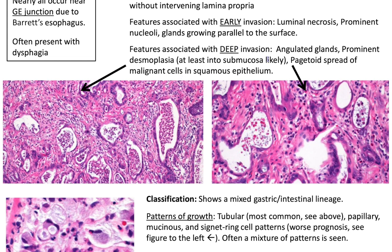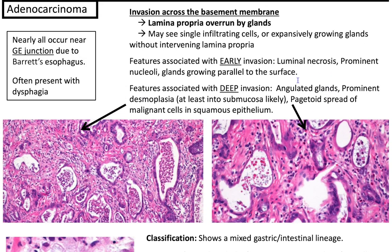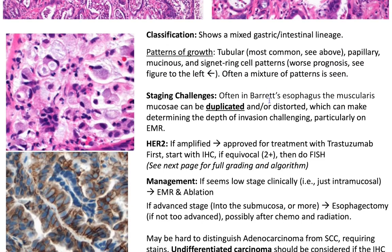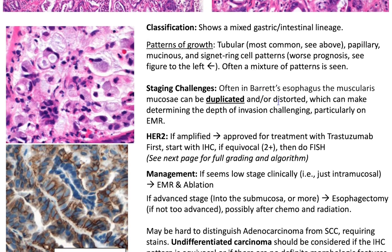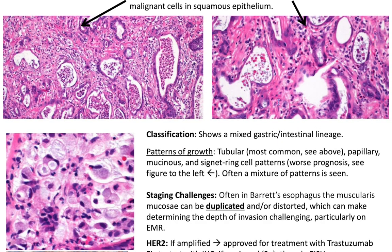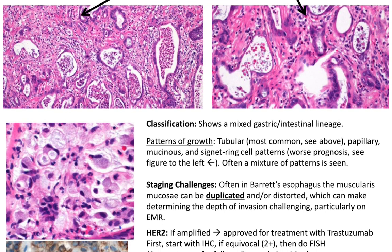Features associated with deep invasion include angulated glands, prominent desmoplasia at least into the submucosa, because only when cancer invades into the submucosa do you get a desmoplastic response. This is seen in esophageal tumors and other GI tumors like colorectal carcinomas — desmoplastic response occurs with submucosal invasion but not intramucosal. Pagetoid spread of malignant cells in squamous epithelium is another deep invasion clue. Classification shows mixed gastric-intestinal lineage with multiple growth patterns: most common is tubular, with papillary, mucinous, and signet ring cell patterns — the latter having worse prognosis. Often a mixture of patterns is seen.